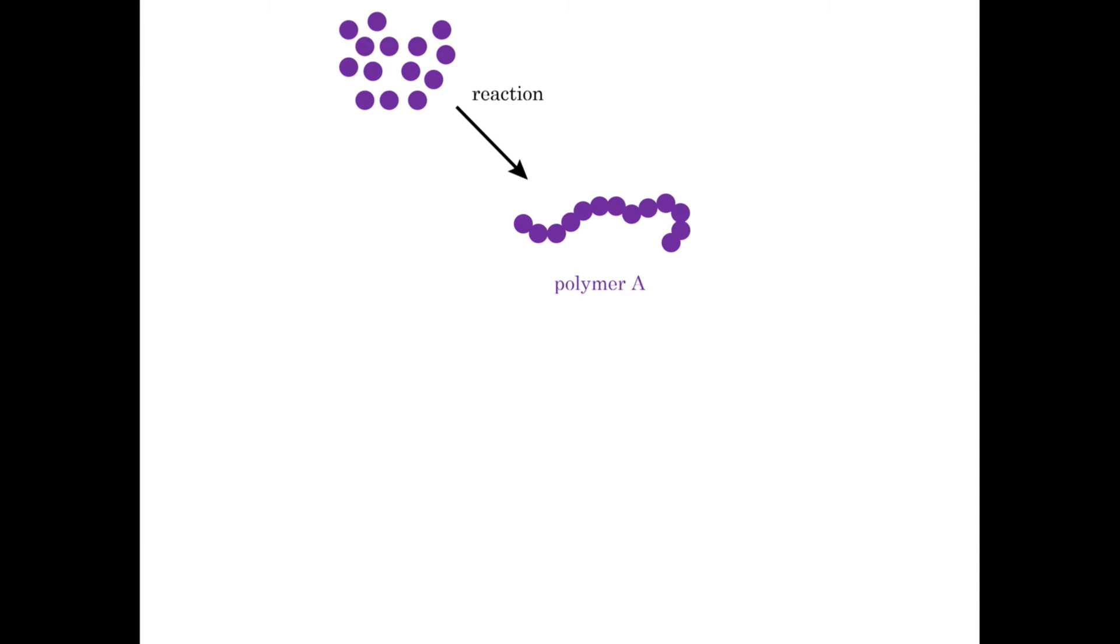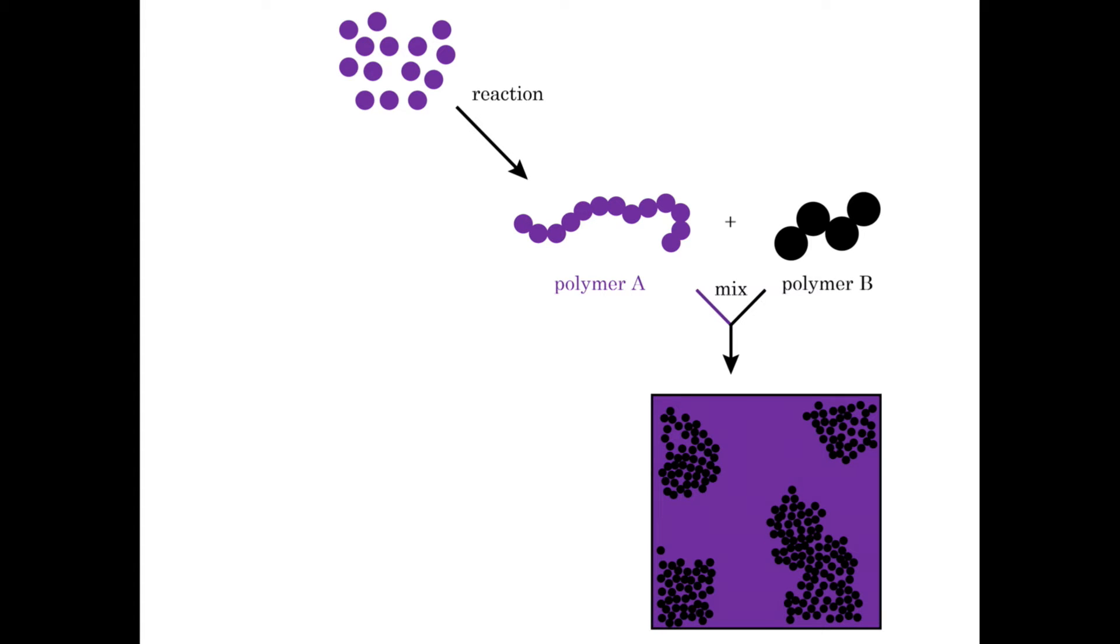Our solar cells are made from polymers, the same materials used to make cheap plastics. Polymers are long molecules made from many smaller, repeating units. When they are mixed to make the solar cell, they form large regions of each component.